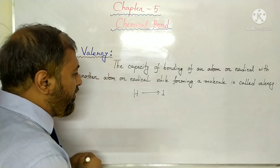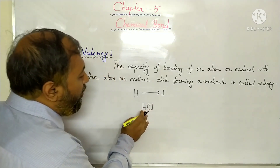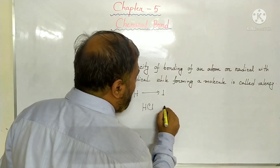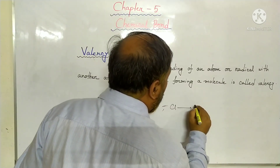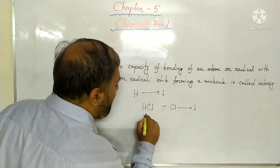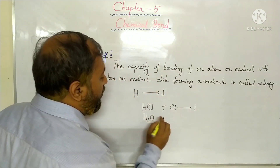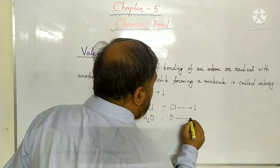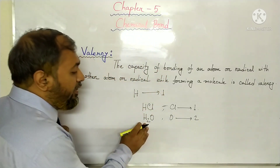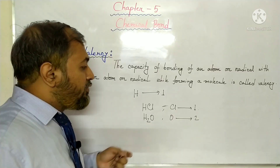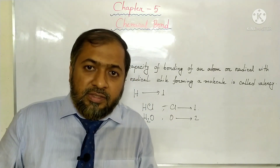For example, if we write down hydrogen chloride, you can see there is only one hydrogen. Therefore, the valence of chlorine will be 1. Similarly, in the water molecule H₂O, the valence of oxygen is 2 because there are 2 hydrogen atoms present. So from here we also find out that the valence of oxygen is 2.